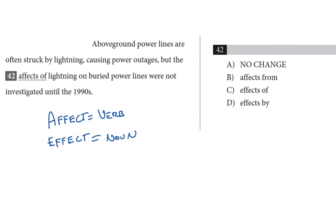So what is the word doing here? Is it being used as a verb or a noun? The affect of lightning on buried power lines, that's being used as a noun, like special effects of lightning. So right there we can cross out the two affects options, so that's A and B.